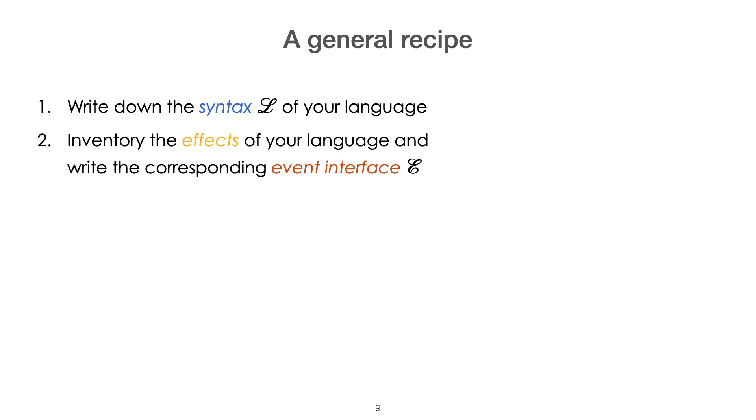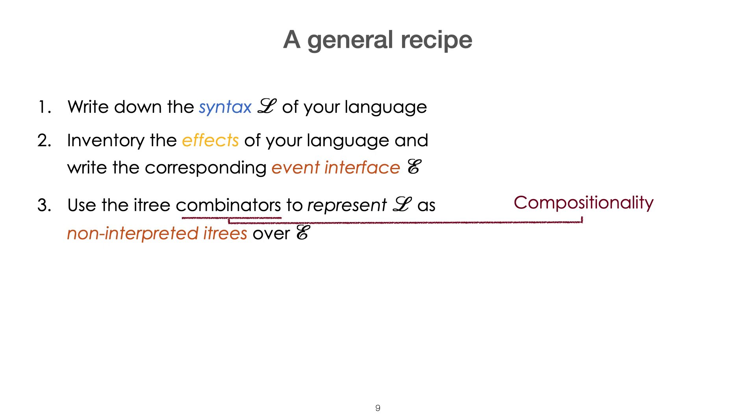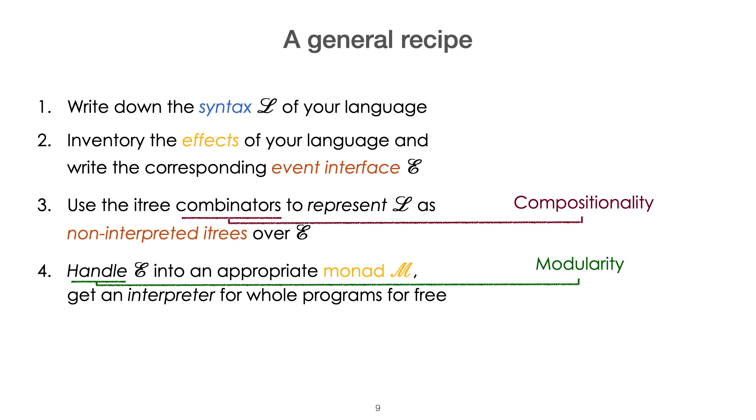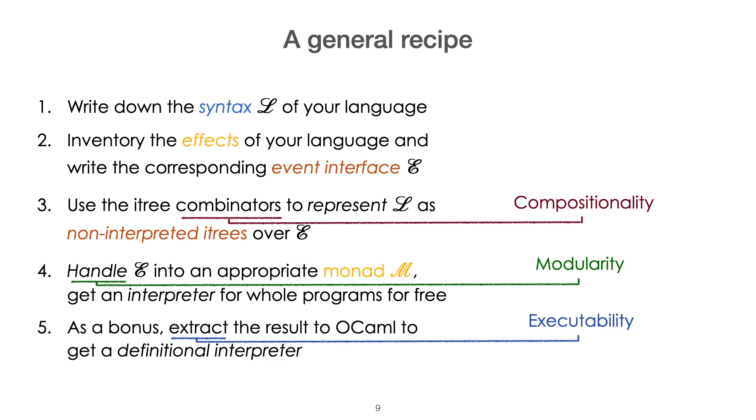You therefore get at a high level, a general recipe. If you want to define the semantics of a language L, write, of course, its syntax, but then inventory the effects that your language may have. You will categorize these effects into various interfaces, and you will put them together. Then, you will represent the syntax as these non-interpreted interaction trees over this event interface. The library will provide combinators that help you do so in a compositional way. After that, each of these categories of events are implemented in an appropriate monad, and because you handle each of these categories of events separately, you obtain some modularity. Finally, because interaction trees do not go into prop, they are a co-inductive data structure, you may still extract the result and get an interpreter that you can execute in your command.